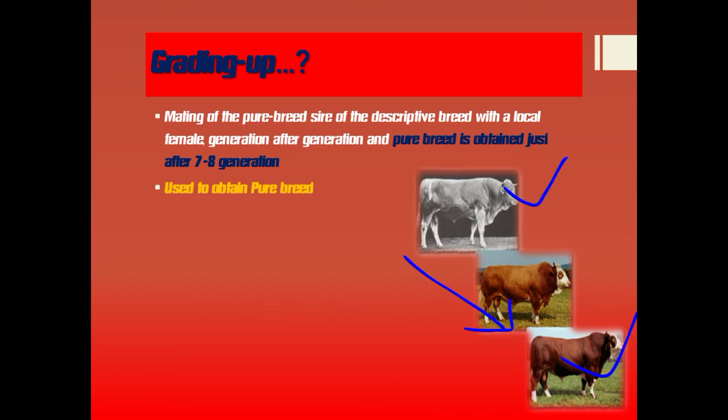For example, here this one breed indicates a pure breed. So if we want to obtain this breed, we have to follow this track to produce it. This pure breed is obtained from that original breed through successive generations.